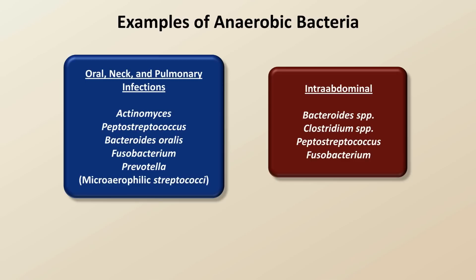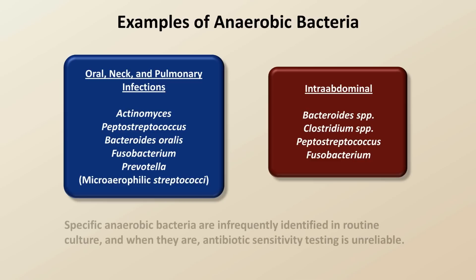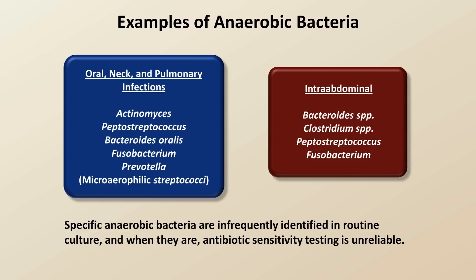With the exception of the genus Clostridium, which is responsible for a range of disease states from C. diff colitis to tetanus to gas gangrene, the other bacteria here are probably unfamiliar to you. The reason is simple: specific anaerobic bacteria are infrequently identified in routine culture, and when they are, antibiotic sensitivity testing is unreliable. Even when a good fluid or tissue sample is obtained in a patient with a clinically overt infection, the culture fails to grow the responsible anaerobic bacteria, and we are forced to treat empirically. As a consequence, knowledge of individual species of anaerobic bacteria is not nearly as important as with aerobic bacteria.